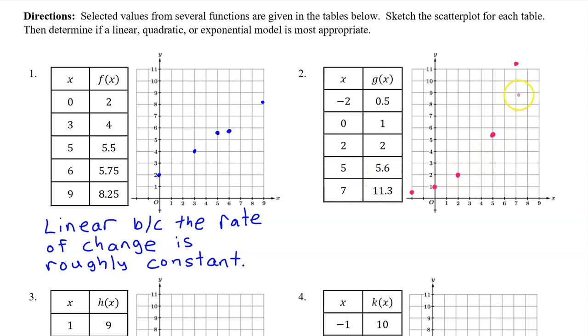Here's the scatterplot for number two. The pattern definitely appears exponential, but what if we had to justify that? Notice that we have mostly equal length input value intervals. Notice that from 0.5 to 1, the output values are doubling. And then from 1 to 2, the output values are doubling again. And then, going back to my equal length input value intervals, from 5.6 to 11.3, this is very close to doubling as well.